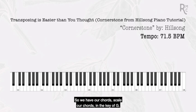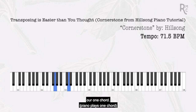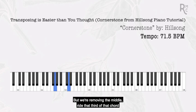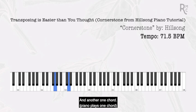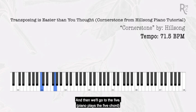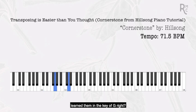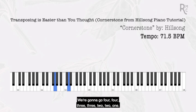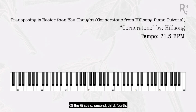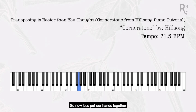Now let's take the intro of Cornerstone and move it to G. Our left hand plays the one chord — which is now G — removing the middle note so it doesn't sound muddy. Then another one chord, down to the six, another six, the four, and the five. The right hand does the same lead line as in C, just in the key of G: four, four, three, three, two, two, one — using the first, second, third, and fourth notes of the G major scale.